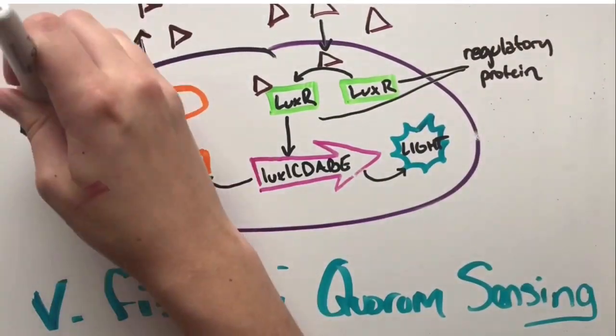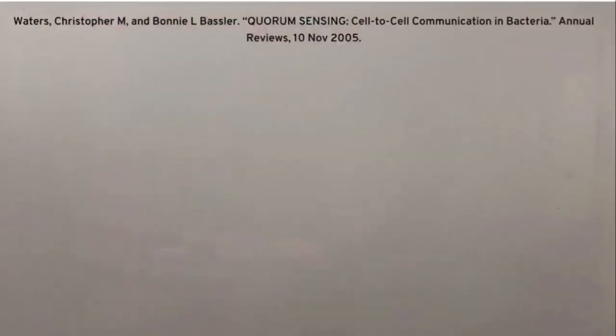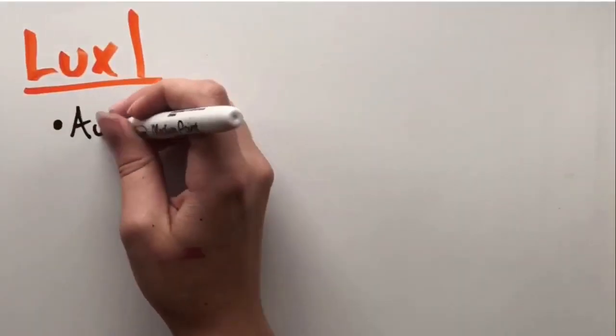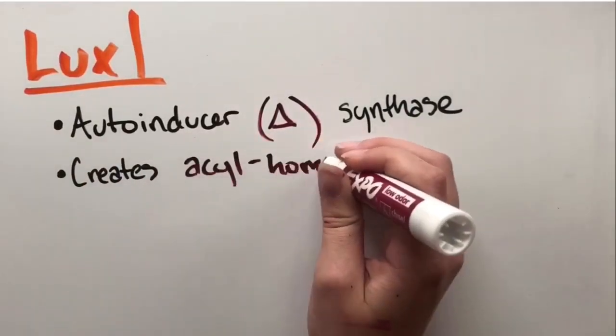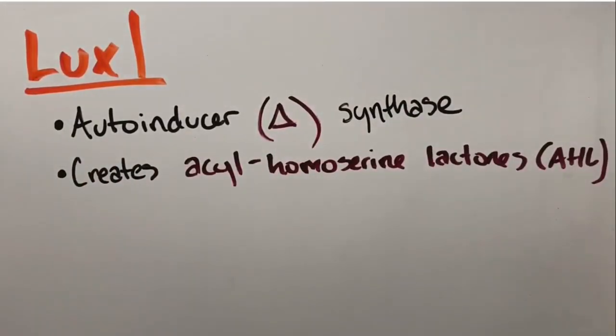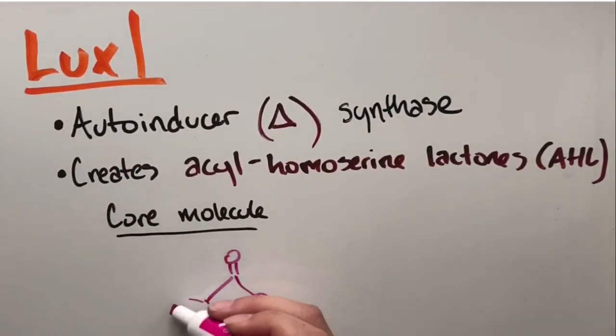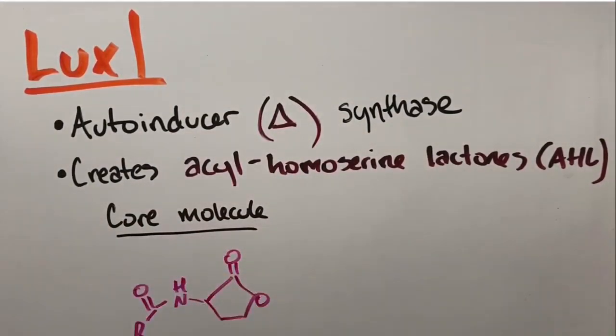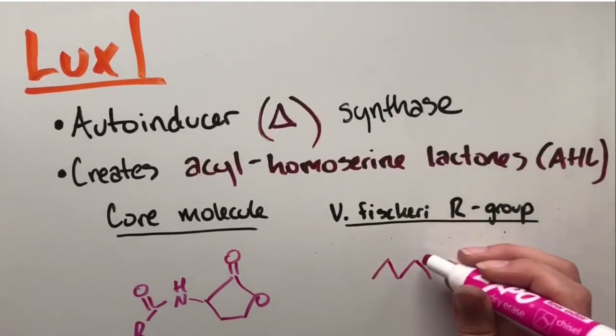LUX-I is the autoinducer synthase, meaning it creates the density-measuring molecule that is received by other bacteria, which is known as the acylhomoserine lactone autoinducer, or AHL. The molecule is primarily exchanged between gram-negative bacteria, which have thinner cell walls than gram-positive bacteria, but its attached R group is what makes this form unique to Vibrio fischeri.